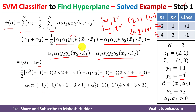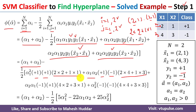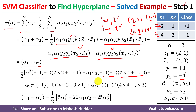Once you simplify the equation, you will get alpha 1 plus alpha 2 minus 1 by 2, and within the square bracket: 5 alpha 1 squared minus 22 alpha 1 alpha 2 plus 25 alpha 2 squared.